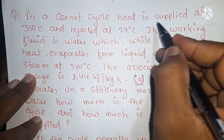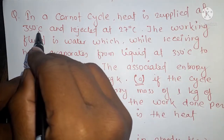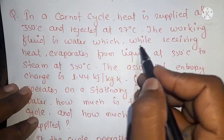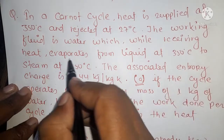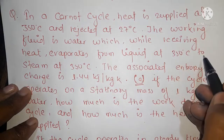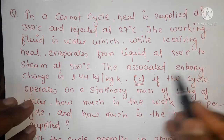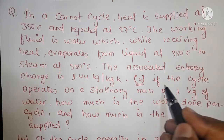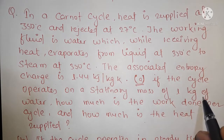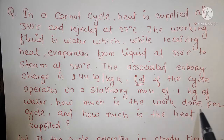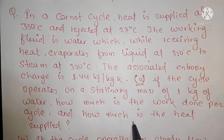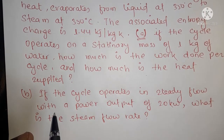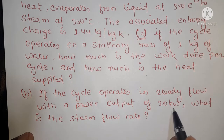In a Carnot cycle, heat is supplied at 350 degrees Celsius and rejected at 27 degrees Celsius. The working fluid is water, which while receiving heat evaporates from liquid at 350 degrees Celsius to steam at 350 degrees Celsius. The associated entropy change is 1.44 kilojoule per kg Kelvin. If the cycle operates on a stationary mass of 1 kg of water, how much is the work done per cycle and how much is the heat supplied?